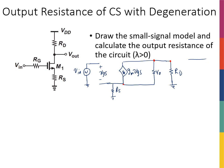Looking at the input resistance — that's the resistance looking into the gate — even if I have an RG, the resistance Rin is going to be RG plus infinity, so infinity. Nothing has changed on the input side.